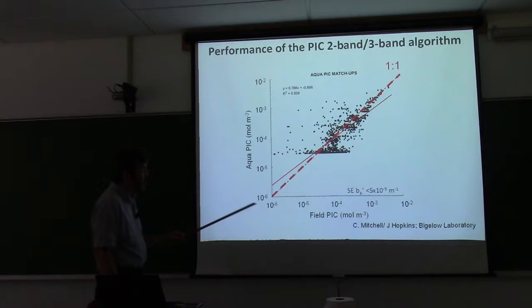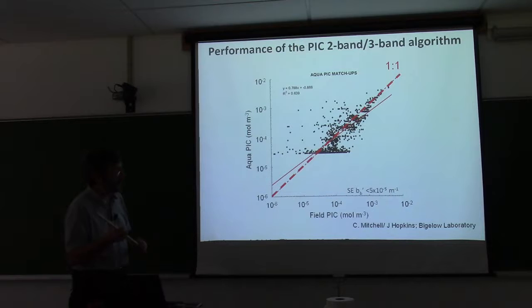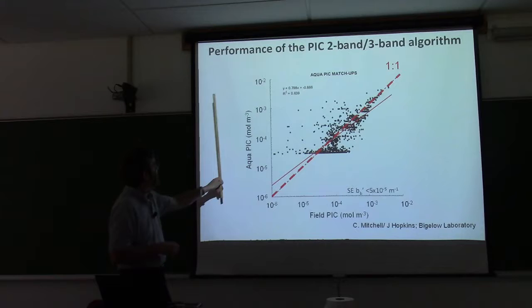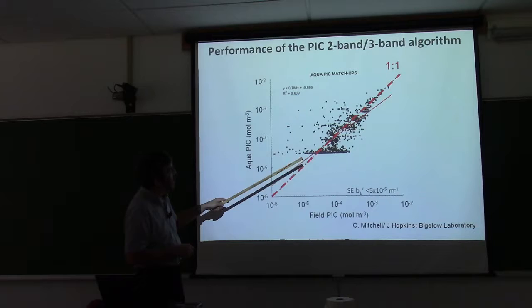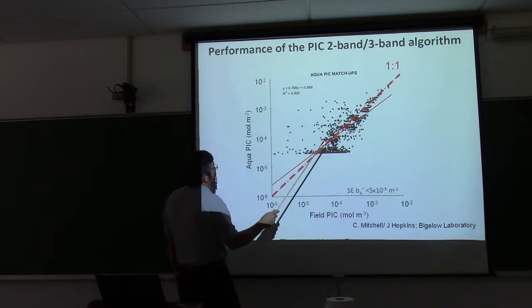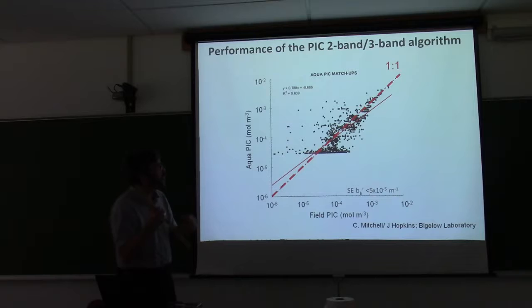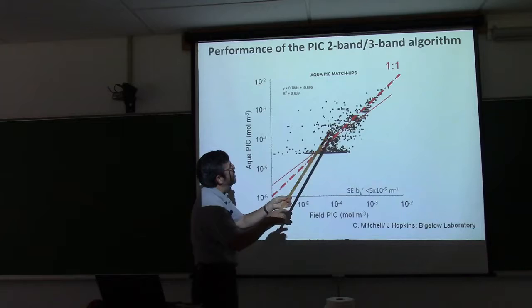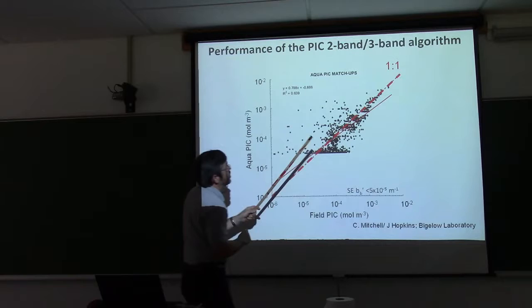How well does the algorithm work? Here are field estimates of calcite based on acid labile scattering versus MODIS Aqua estimates of PIC — this is log-log. The one-to-one line is the dashed line. We have a cutoff related to how well we can measure with the optical technique. As you get to lower calcium carbonate concentrations, scattering of other stuff makes error limits go up. At higher concentrations, the errors converge and we can make more accurate estimates.